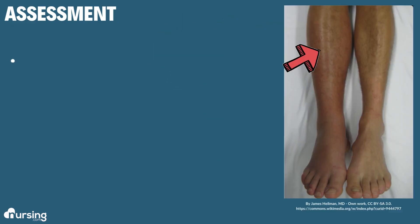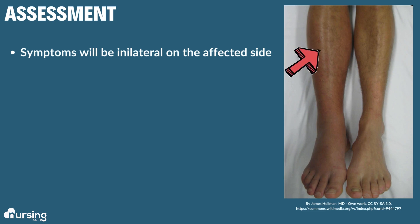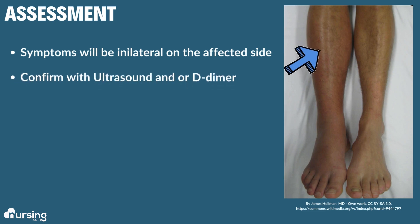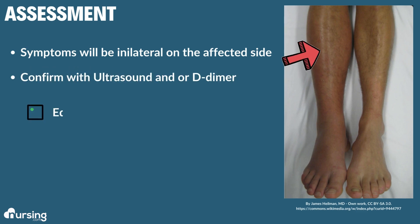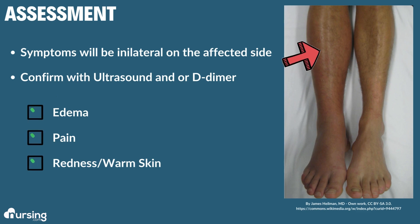So if a clot does happen, what are we going to see in the patient? First, symptoms are going to be unilateral on the affected side — meaning it only affects the side where the clot or thrombophlebitis is. You can see this patient's right leg is much more swollen than their left leg. We see swelling and edema, pain, redness and warmth to their skin, and they'll likely be warm to the touch and tender.